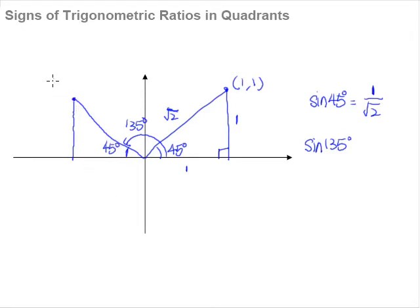This point here will be negative 1 (x) and positive 1 (y). So this x value here will be negative 1, this will be positive 1, and again the diagonal of the square gives us square root 2, which is the hypotenuse side of this right-angled triangle. So we need to know that 135 degrees is actually represented by this acute angle of 45 degrees in the second quadrant. So when we say we want to find sine 135 degrees, it is the same as finding sine of this 45 degrees in the second quadrant.